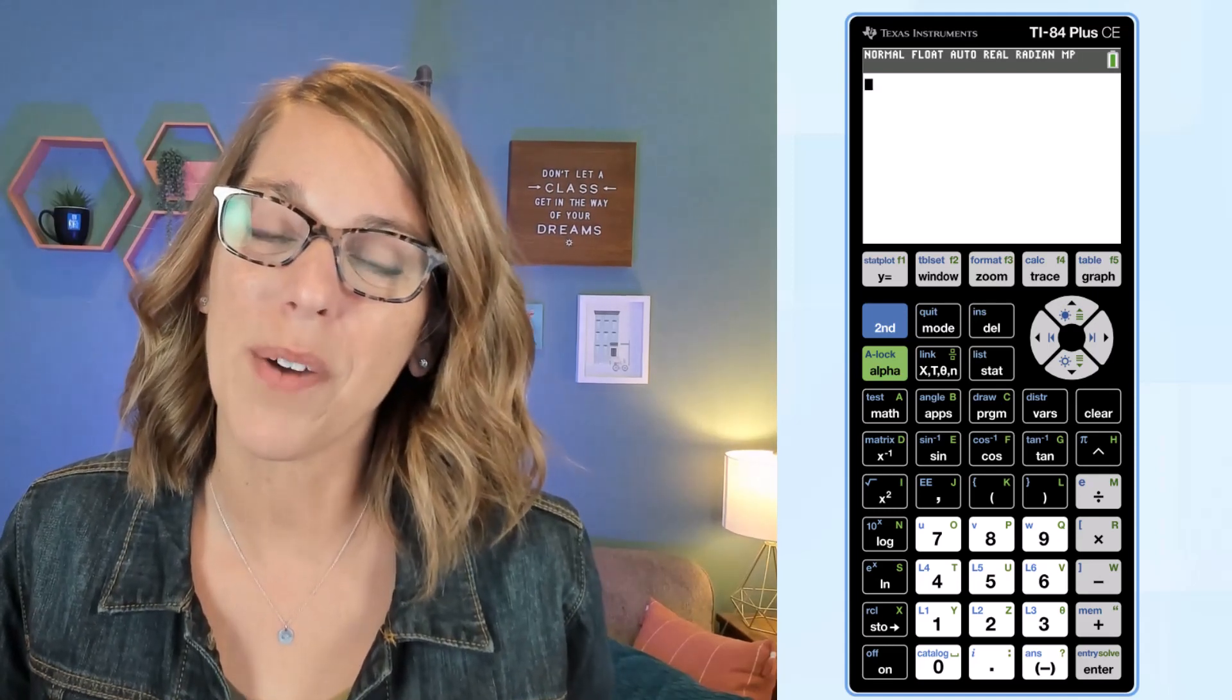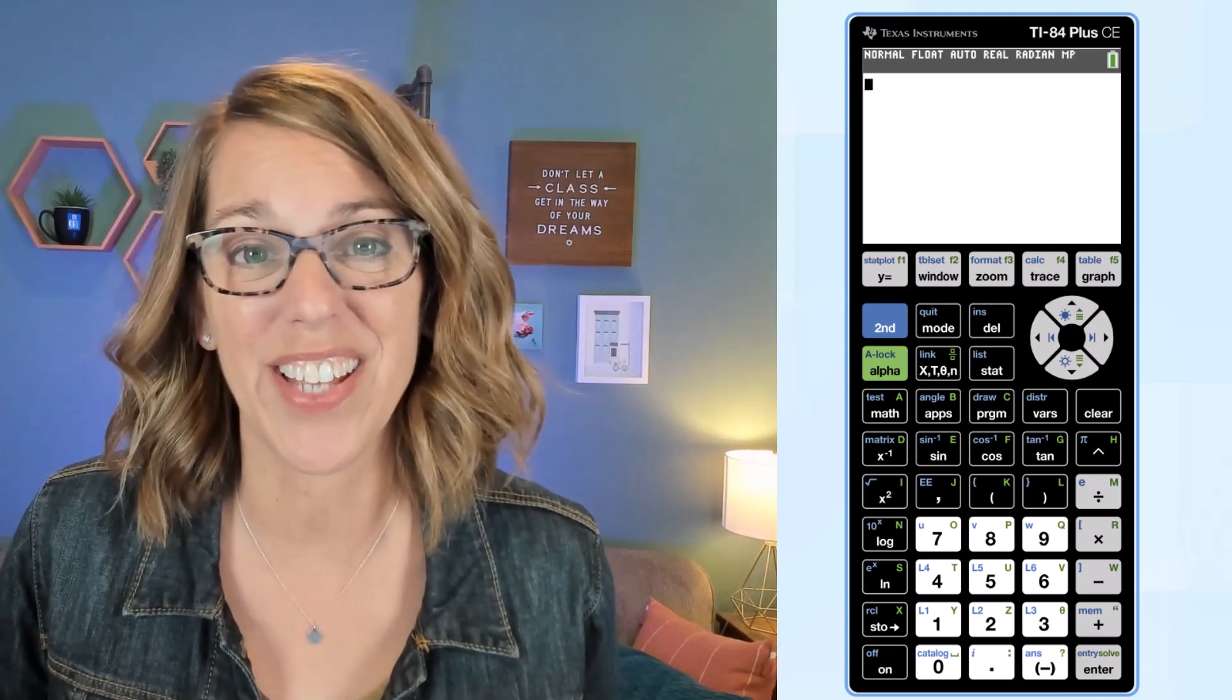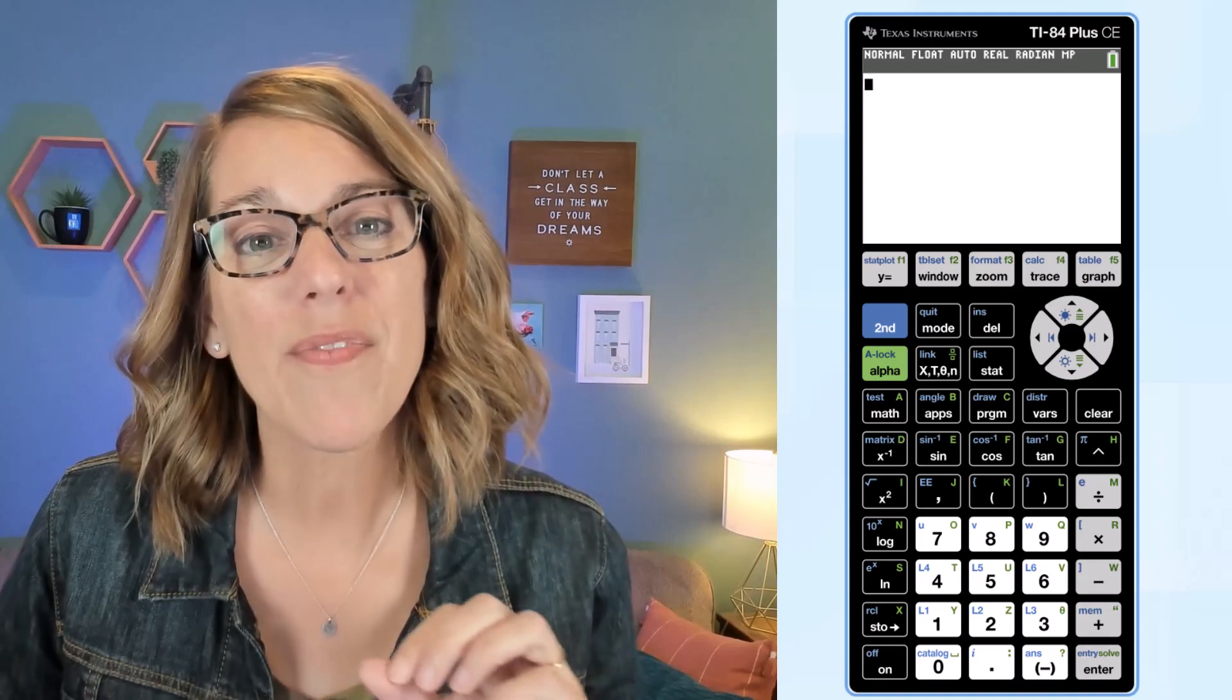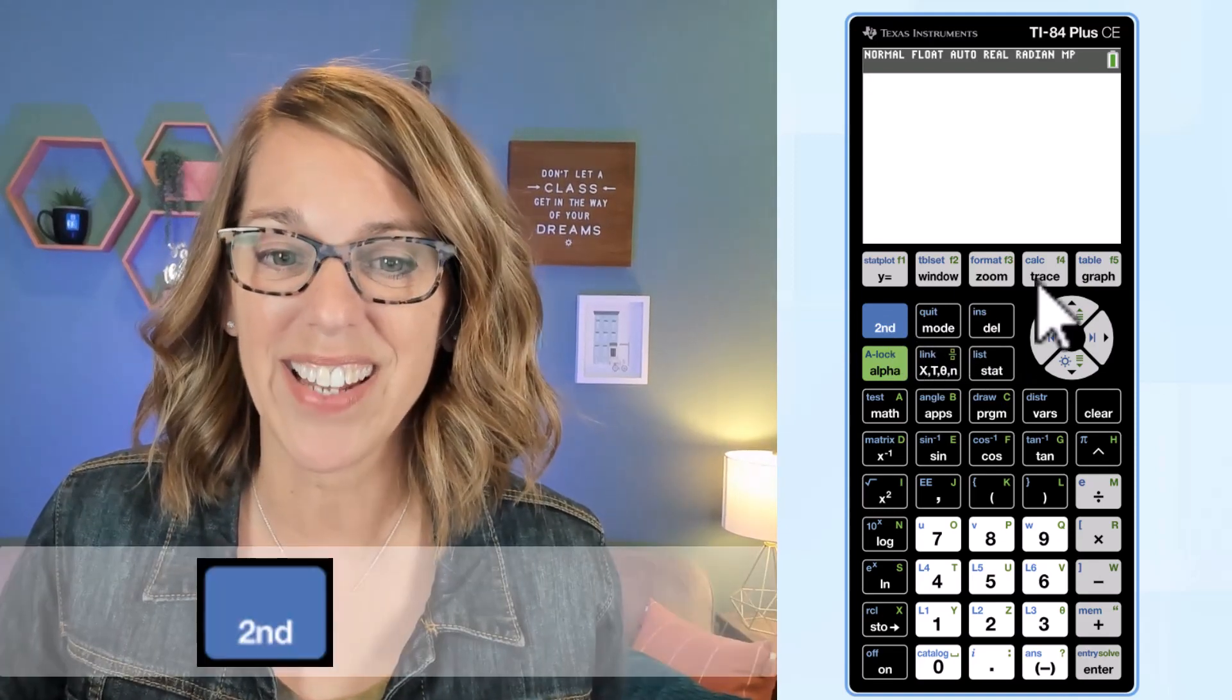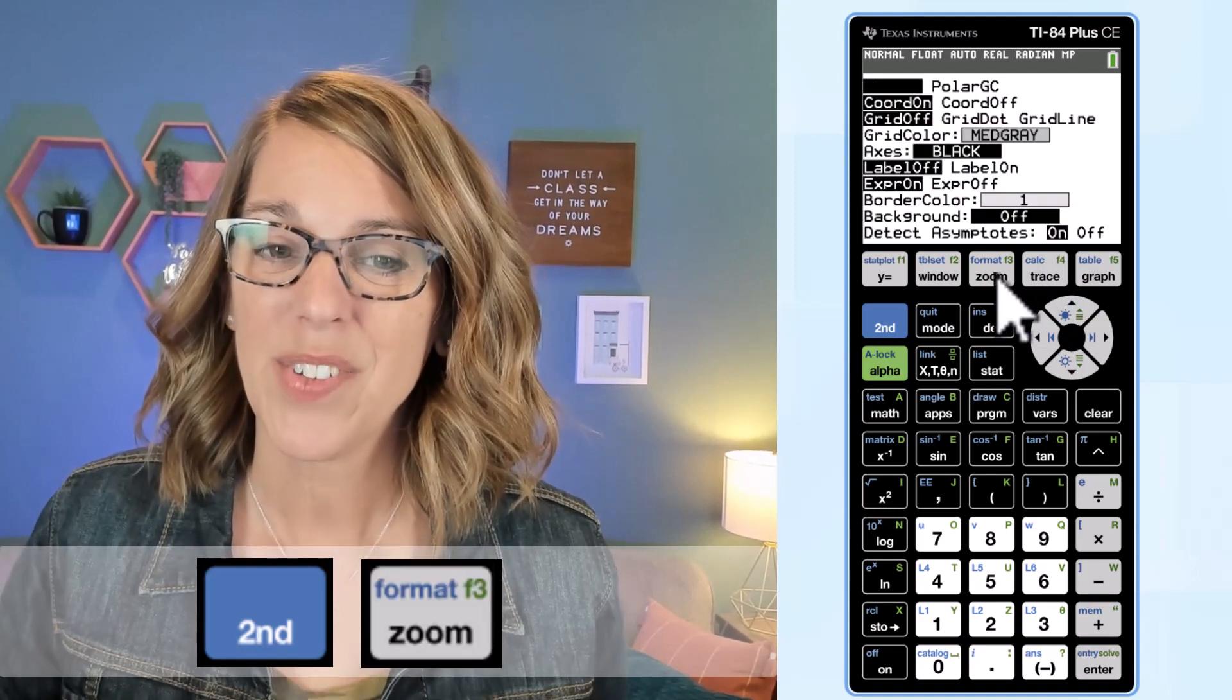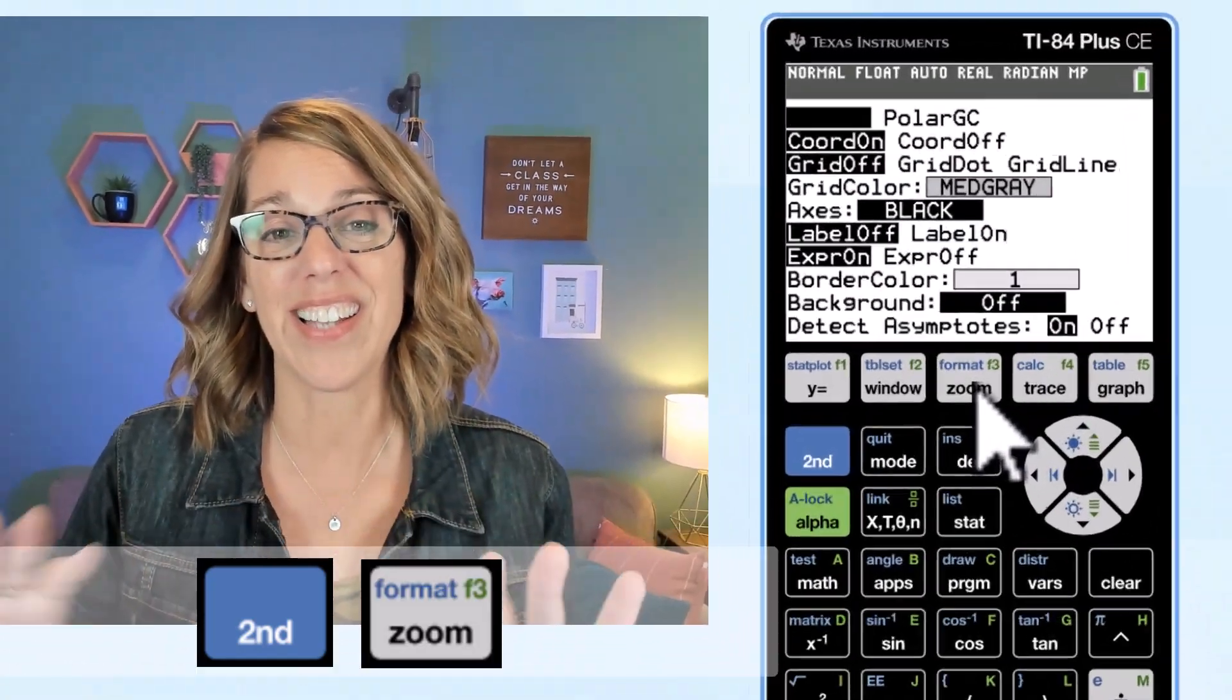We're gonna graph on your TI-84 by first getting your calculator set up correctly. I'm gonna go to my format button that's on that top row of buttons by hitting second followed by format. Now I want yours to look just like mine does.